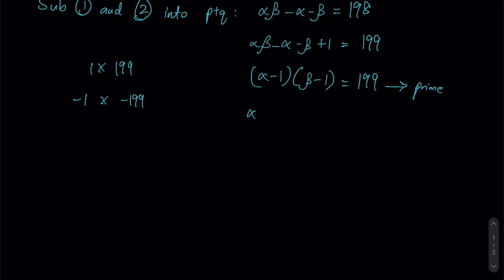Let us explore the positive solutions first. α - 1 could potentially be 199 and then β - 1 could be just 1. α in this case would therefore be 200 and β would just be 2. The pair of solutions 2, 200 gives rise to one pair of integer solutions.